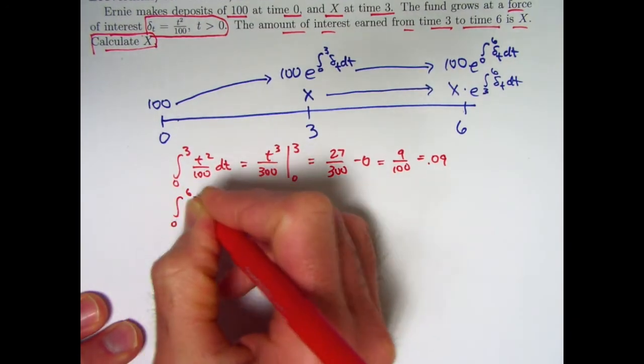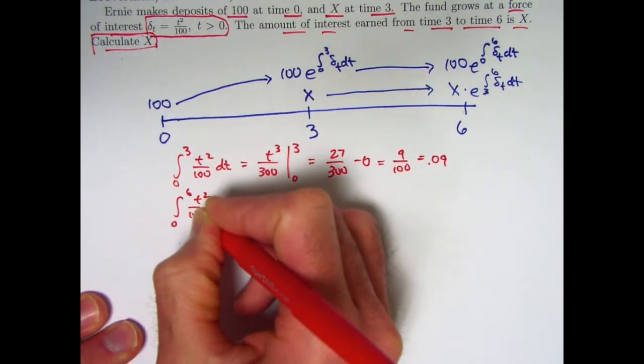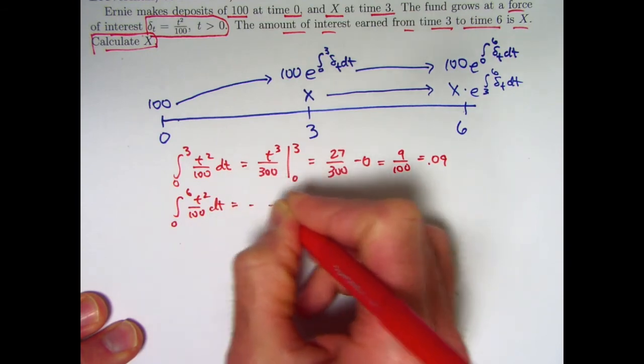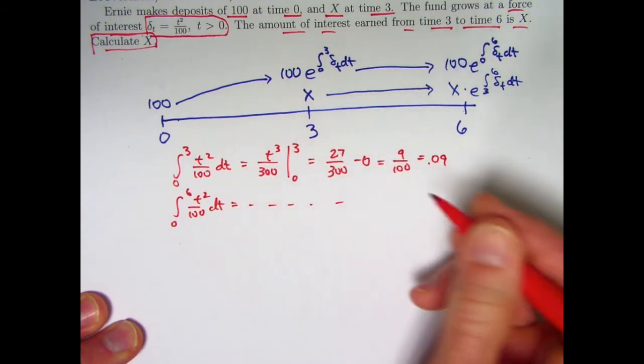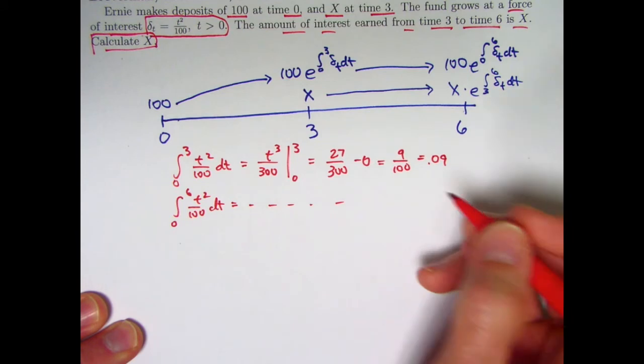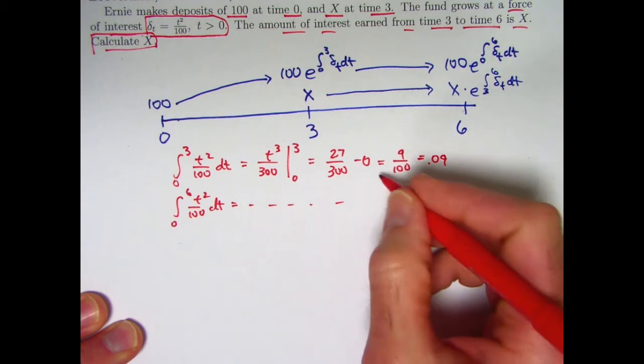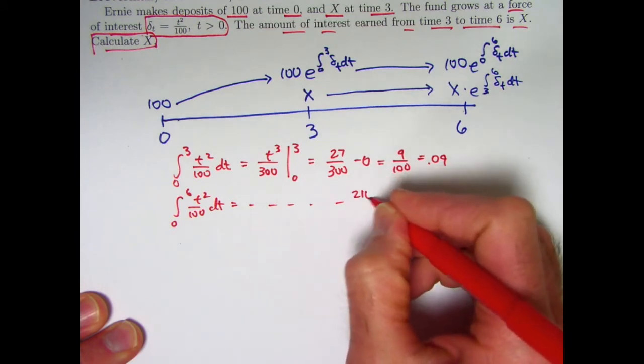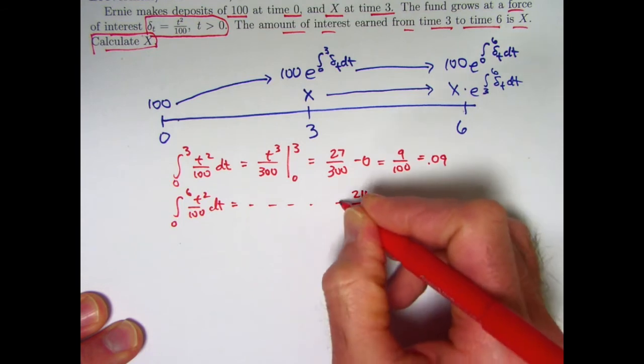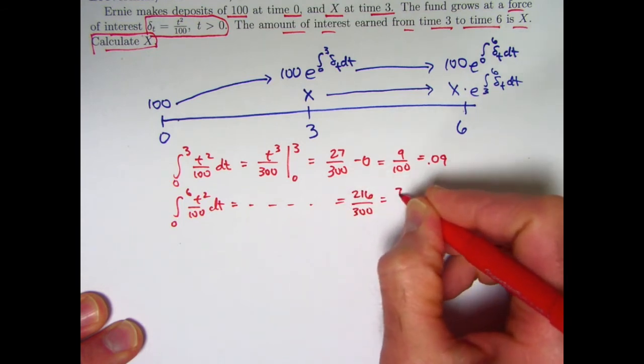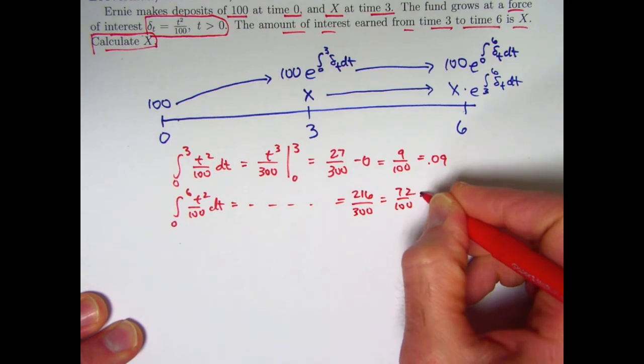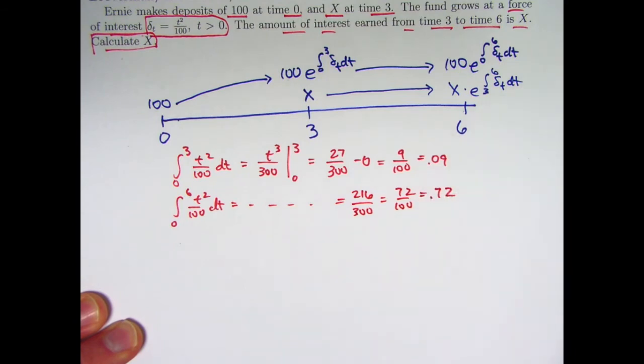The integral from 0 to 6, think about it. It's going to give you the same antiderivative. From 0 to 6, you're going to get 6 cubed over 300 minus 0. That'll be 216 over 300, which equals 72 over 100, which can be reduced further, but you don't have to. Let's just write that as 0.72.